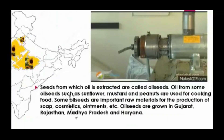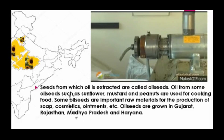Seeds from which oil is extracted are called oil seeds. Oil from some oil seeds such as sunflower, mustard, and peanuts are used for cooking food. Some oil seeds are important raw materials for the production of soap, cosmetics, ointments, etc. Oil seeds are grown in Gujarat, Rajasthan, Madhya Pradesh, and Haryana.